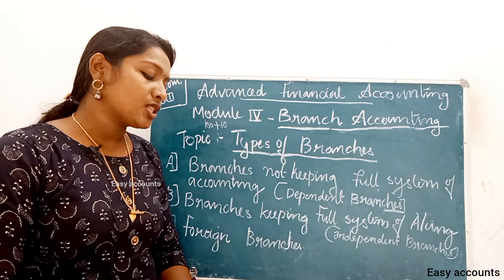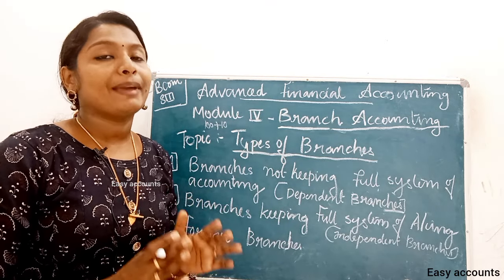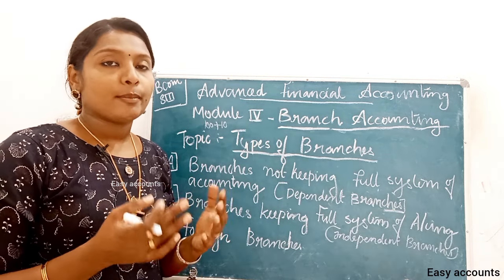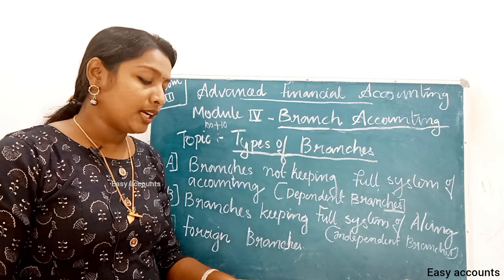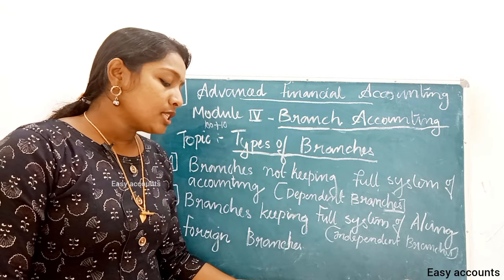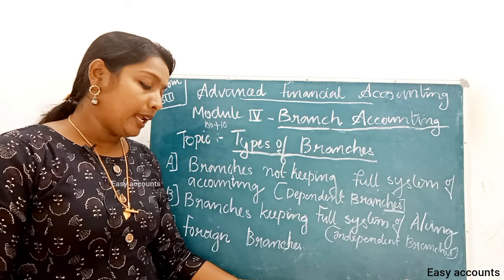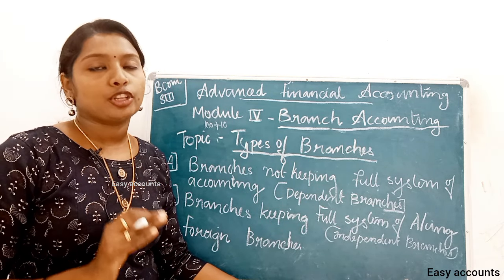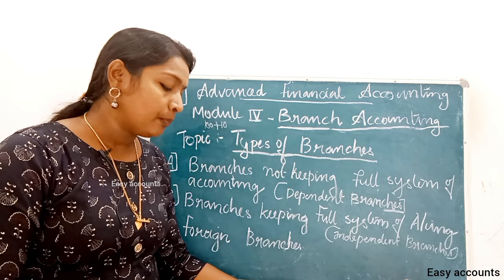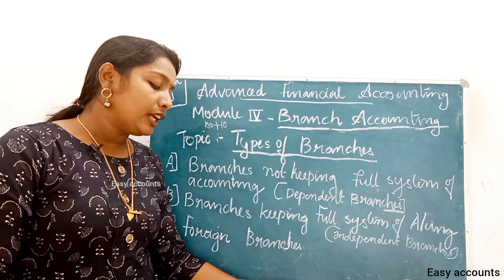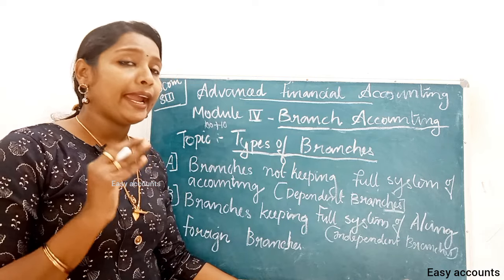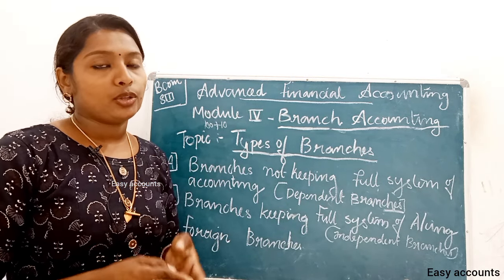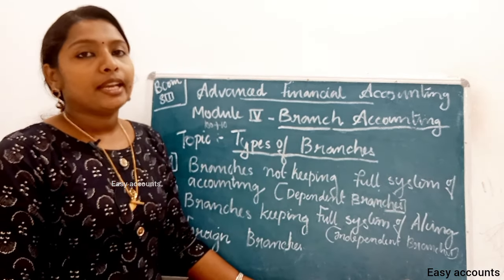Branches keep only some memorandum records such as Stock Register and Debtors Register. The accounts for the dependent branches are maintained only in the books of the Head Office. The system of accounting used depends upon the size of the branch and the degree of control the Head Office wants to exercise.